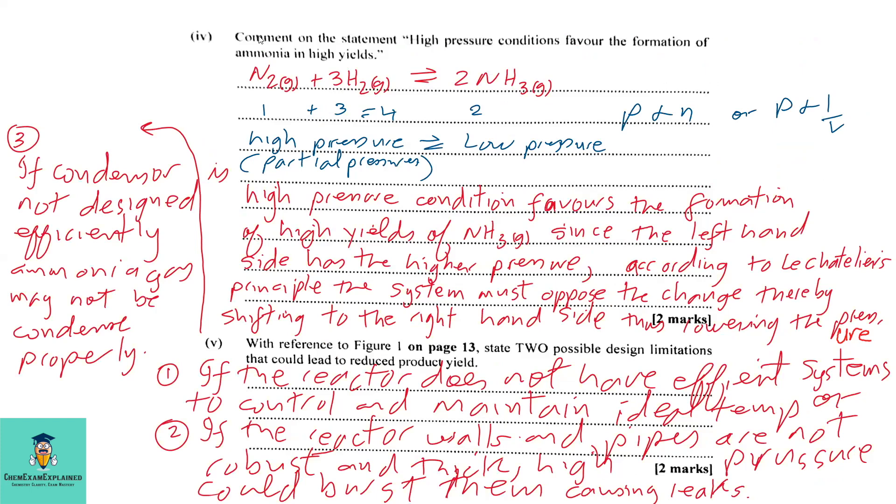Part 4: Comment on the statement: high pressure conditions favors the formation of ammonia in high yields. Before we comment, let's look at the equation and examine the stoichiometric ratio, what we call the mole ratio. Here we have one mole of N2 and three moles of H2 to produce two moles of ammonia. We must know that pressure is directly proportional to the number of moles. So if you look on the left hand side, the side with a higher number of moles would be the side with high pressure and the side with a lower number of moles would be the side with low pressure. You must also be reminded that pressure is inversely proportional to volume. So you can increase pressure by decreasing volume or you can decrease pressure by increasing volume.